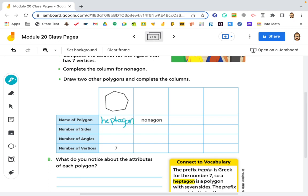Because there are one, two, three, four, five, six, seven sides, seven angles, and seven vertices.